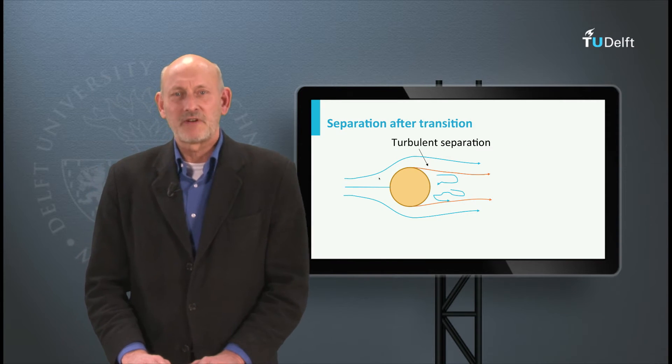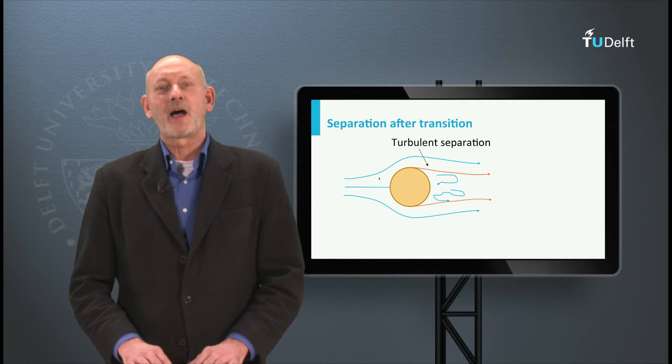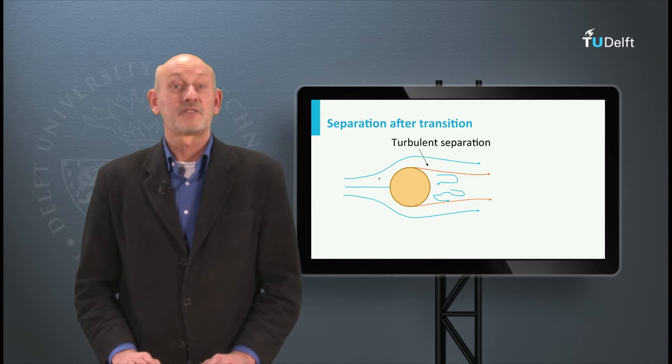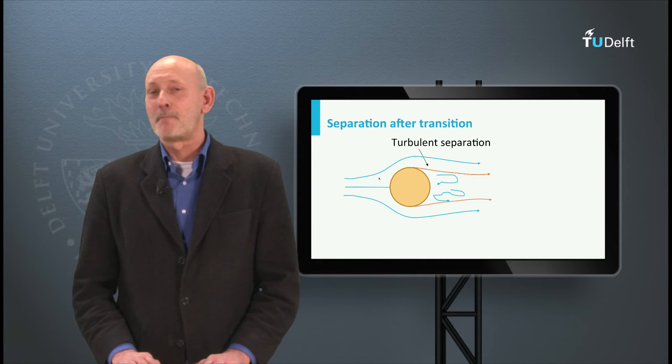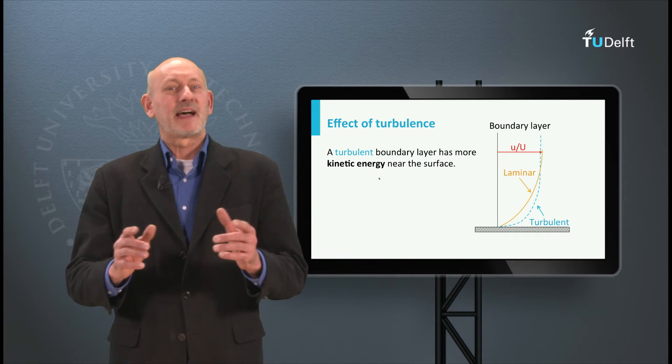If we now increase the Reynolds number, for instance by increasing the velocity at constant cylinder diameter and flow conditions, then at a certain value transition takes place at the cylinder and suddenly this turbulent boundary layer stays attached at the surface much longer. Now why is that?